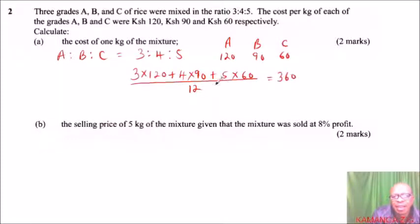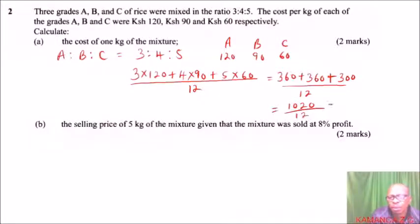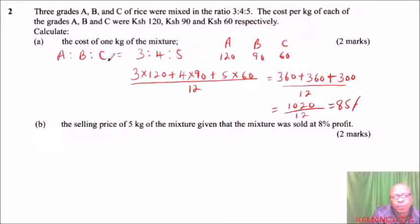3 times 120 gives 360, 4 times 90 gives 360, and 5 times 60 gives 300. We divide by 12. Adding: 360 plus 360 plus 300 gives 1020, divided by 12 gives 85. So 1 kg of the mixture costs 85 shillings.